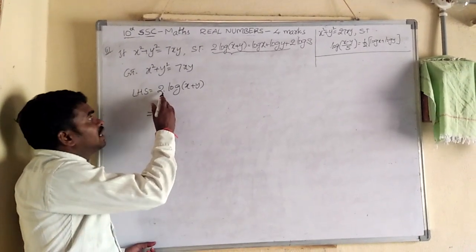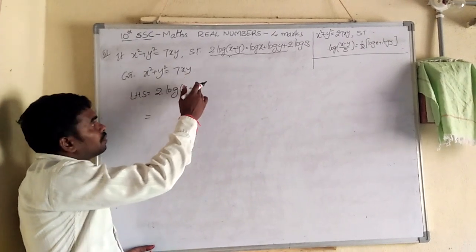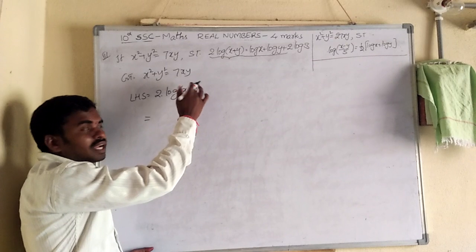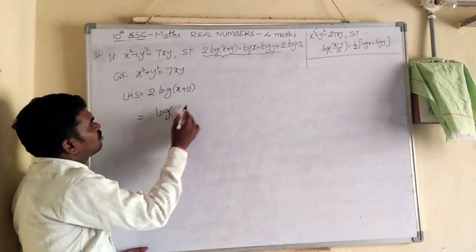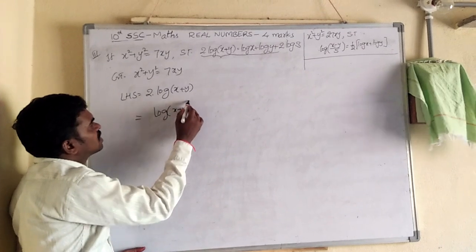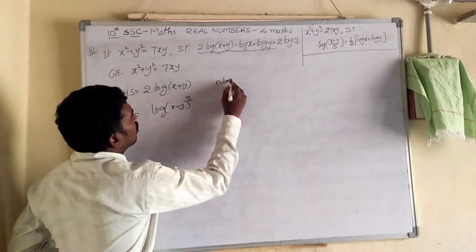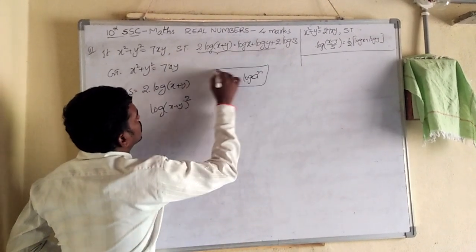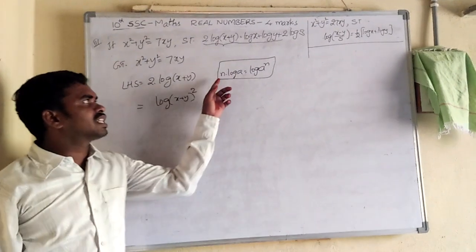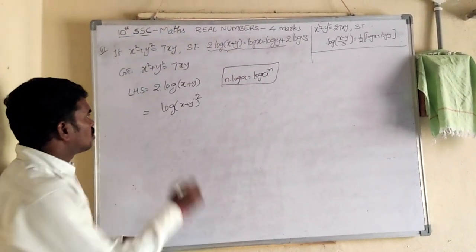Here 2 is there in the left hand side. If you send it to right side, it becomes power of base, means log of, here number is x plus y, power becomes 2. According to, if n into log a equal log a power n. So wherever number is in the left hand side, it becomes the power of the log x.